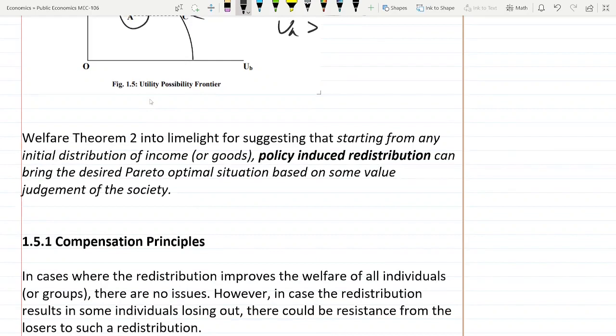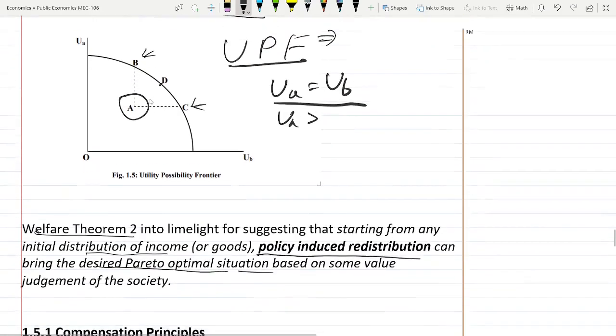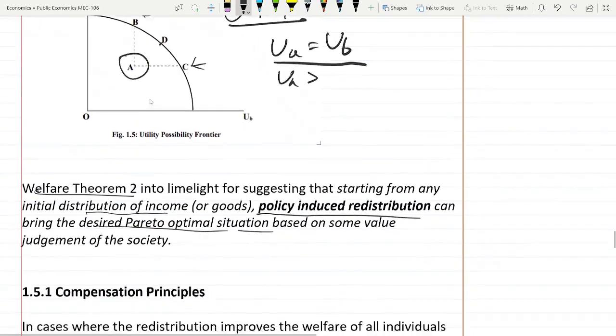Welfare theorem 2 says whatever is the initial distribution of income, if government wants, then policy induced redistribution can bring the desired Pareto optimal situations. Government can make a policy of redistribution and we can bring this point to the Pareto optimality level.